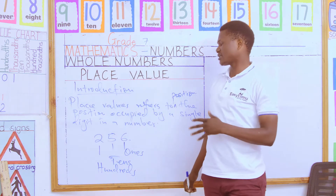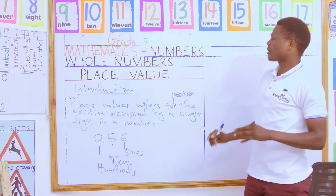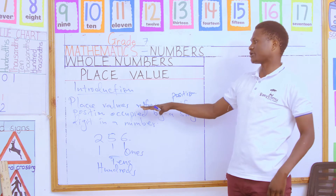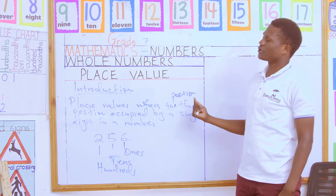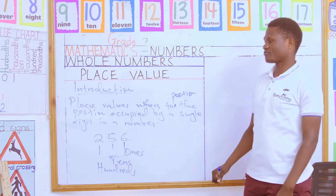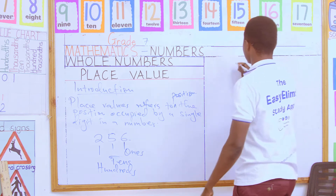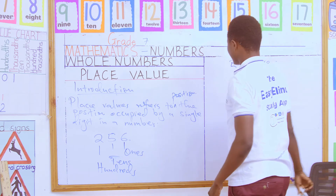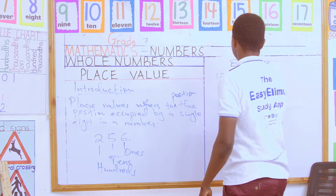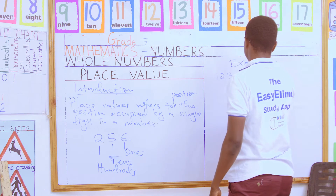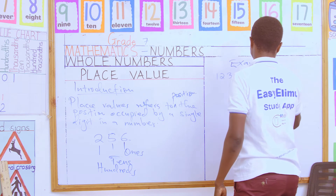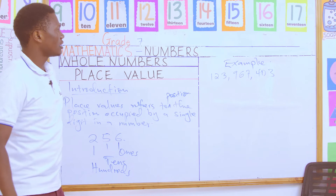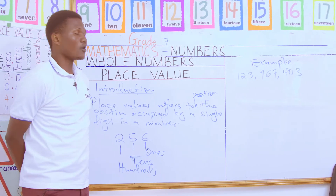Now I want us to discuss the two methods we can use to find the place value of digits, going all the way to hundreds of millions. For example, if you have the number 123 million, nine hundred and sixty-seven thousand, four hundred and three — that is 123,967,403 — we will apply both methods to this number.